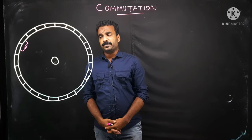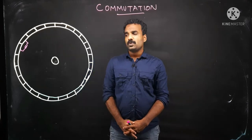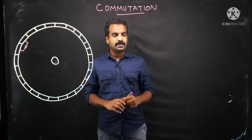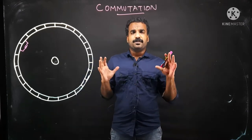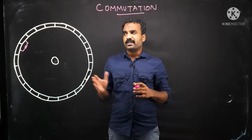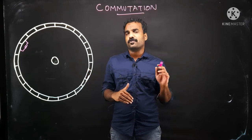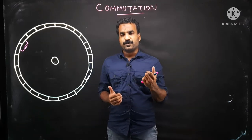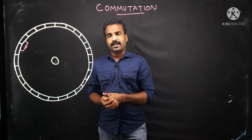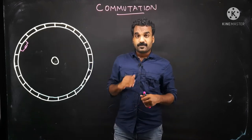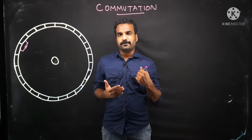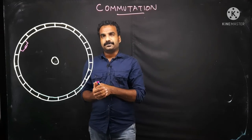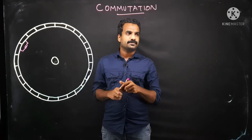Welcome back to the lecture series on DC machines and transformers. Today we are looking into commutation. In all DC machines, the armature current inside the armature winding is AC, but after passing through the brush due to the split-ring arrangement of brush and commutator, we get DC at the output side. After the brush it is DC, but inside it is AC.